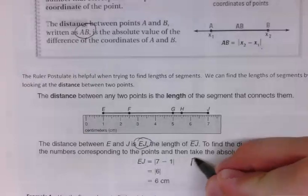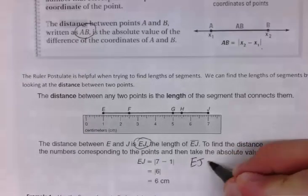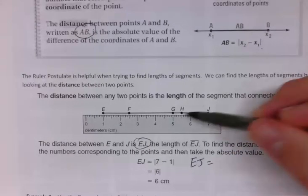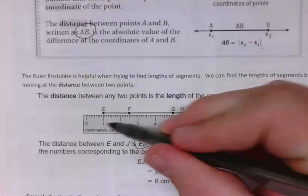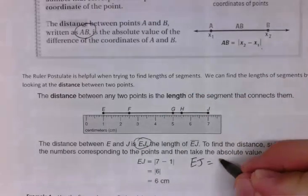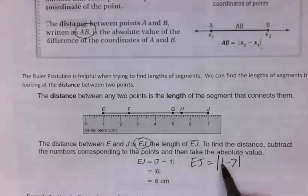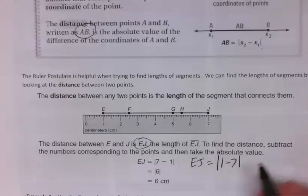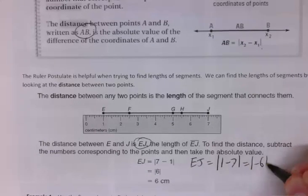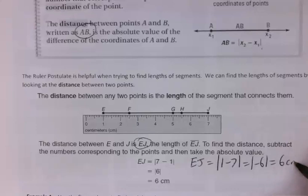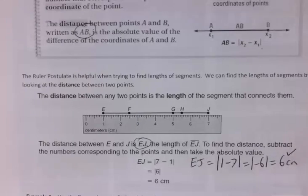What if you actually did it this way instead? What if you did EJ equals, instead of doing 7 minus 1, what if you actually did 1 minus 7? Well, it's still the same values, right? The difference of 1 minus 7 is actually negative 6, but because it's absolute value, you're still going to get your 6 centimeters, and that would still match up with what you got the other way.